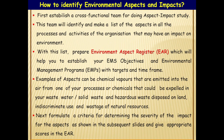This is one of the requirements of ISO 14001 2015 standard to address the environment aspects. Some examples of aspects can be chemical vapors emitted into the air from one of your processes, or chemicals expelled in your wastewater, solid waste and hazardous waste disposed on land, and indiscriminate use and wastage of natural resources like water, energy, raw materials, etc. Next, create the criteria for determining the severity of the impact for the aspects using the criteria matrix as shown in the subsequent slides, and give appropriate scores in the EAR (Environment Aspect Registers).